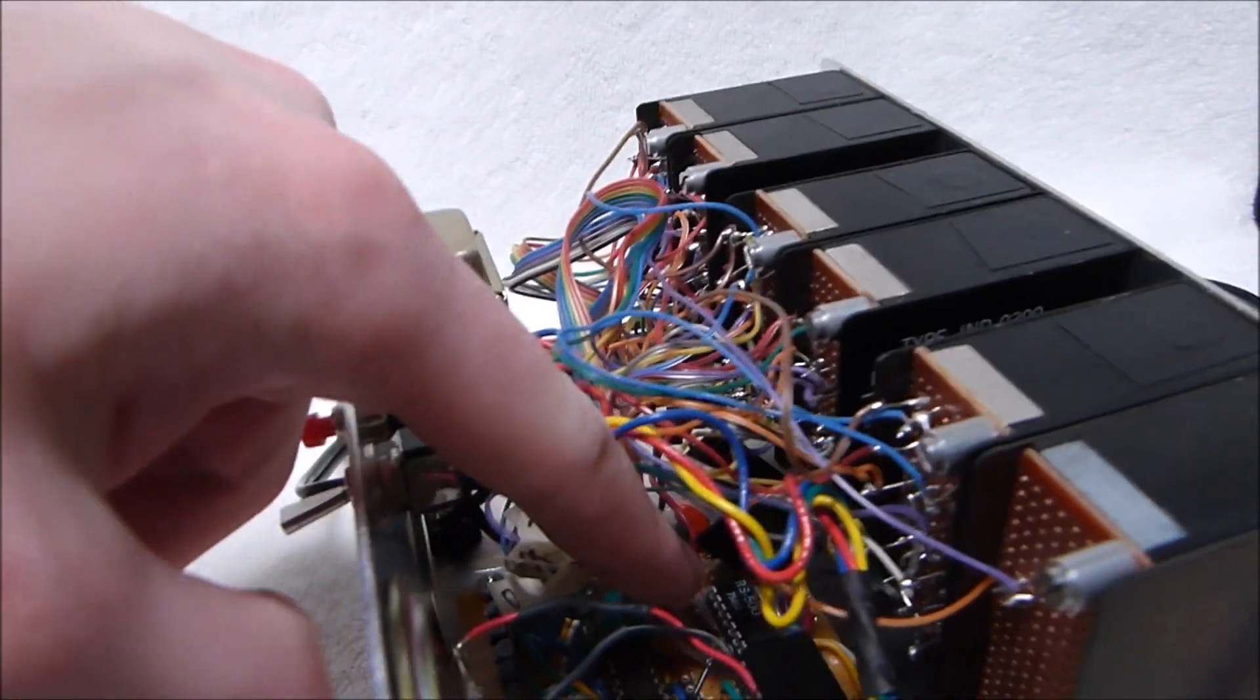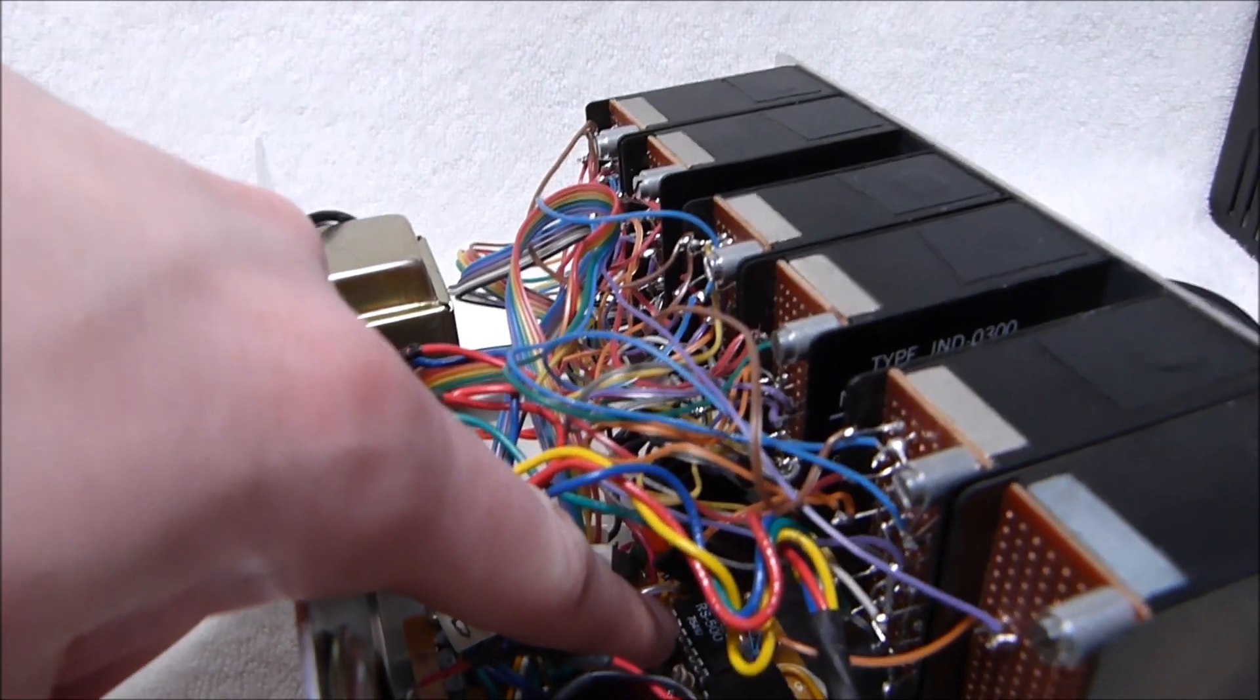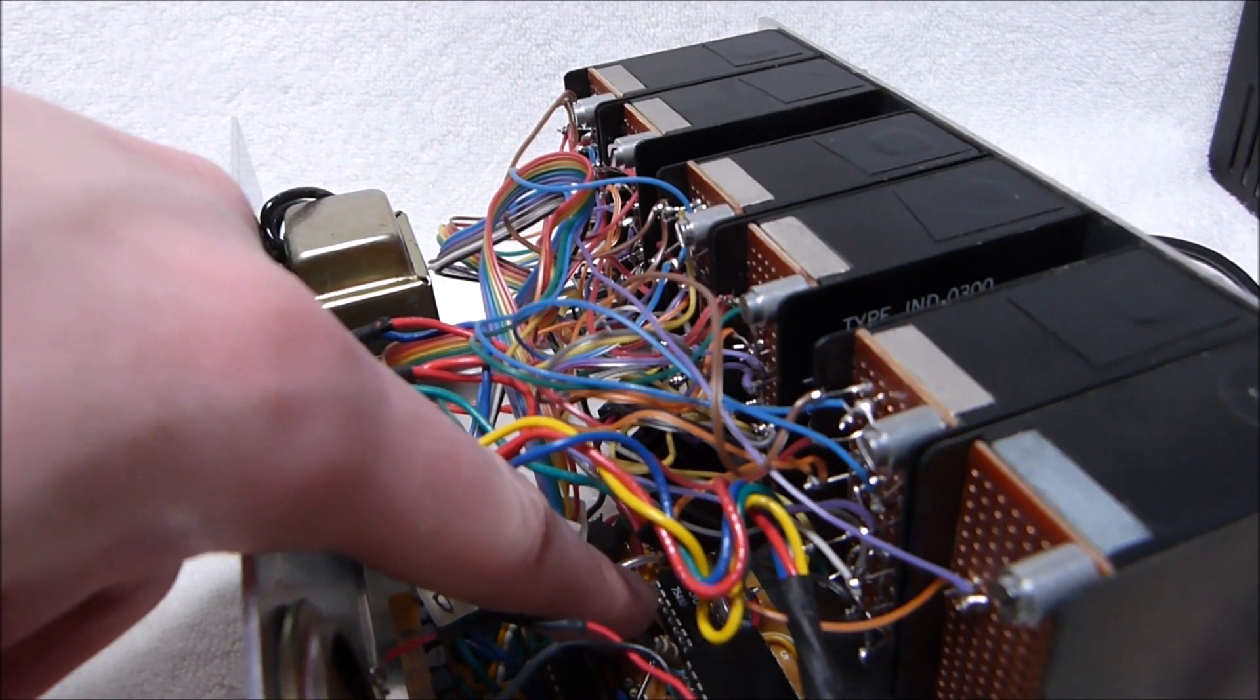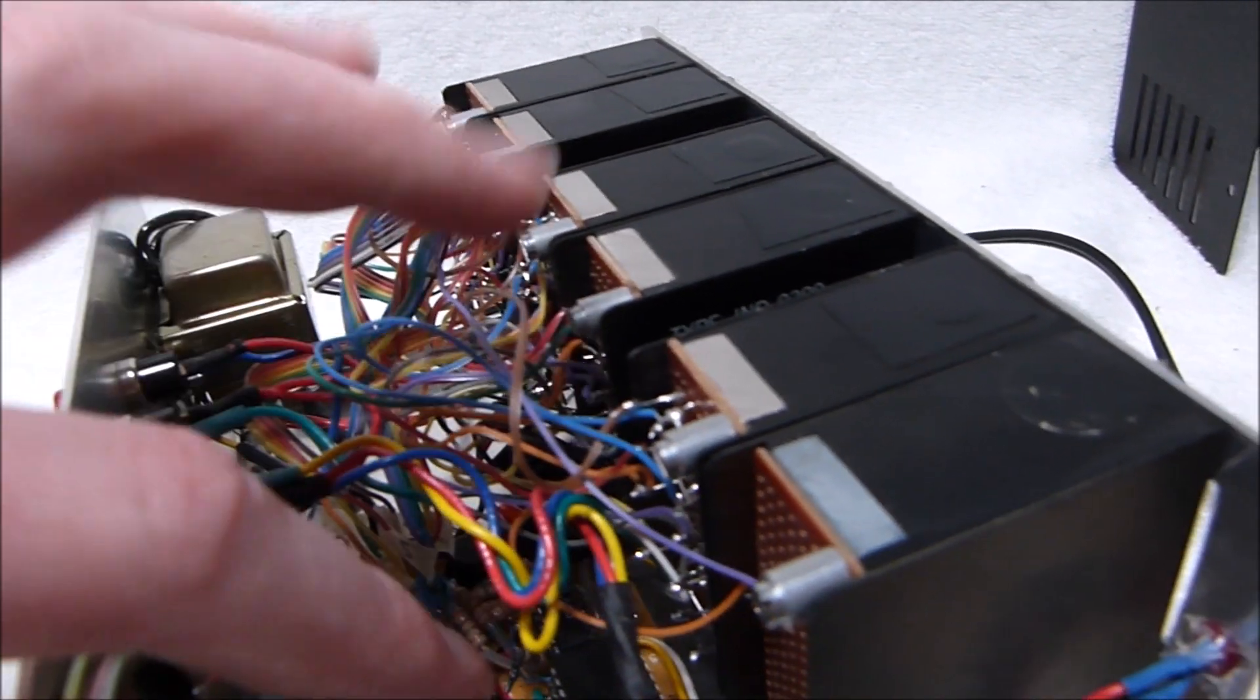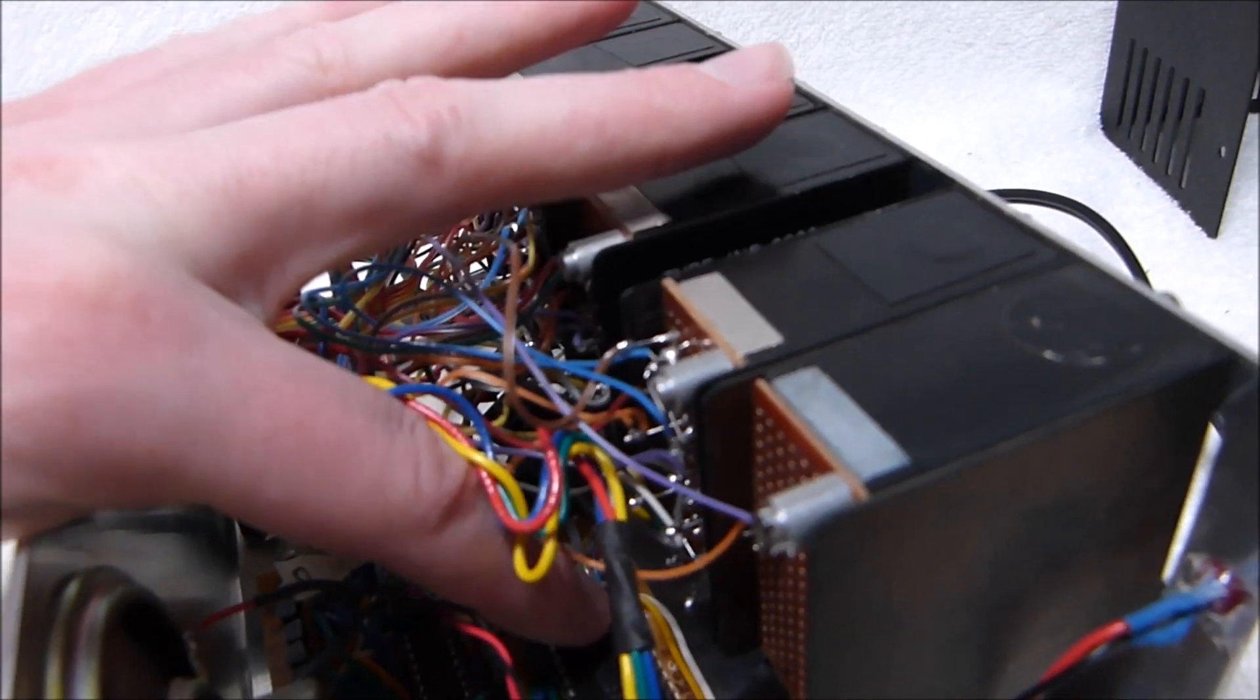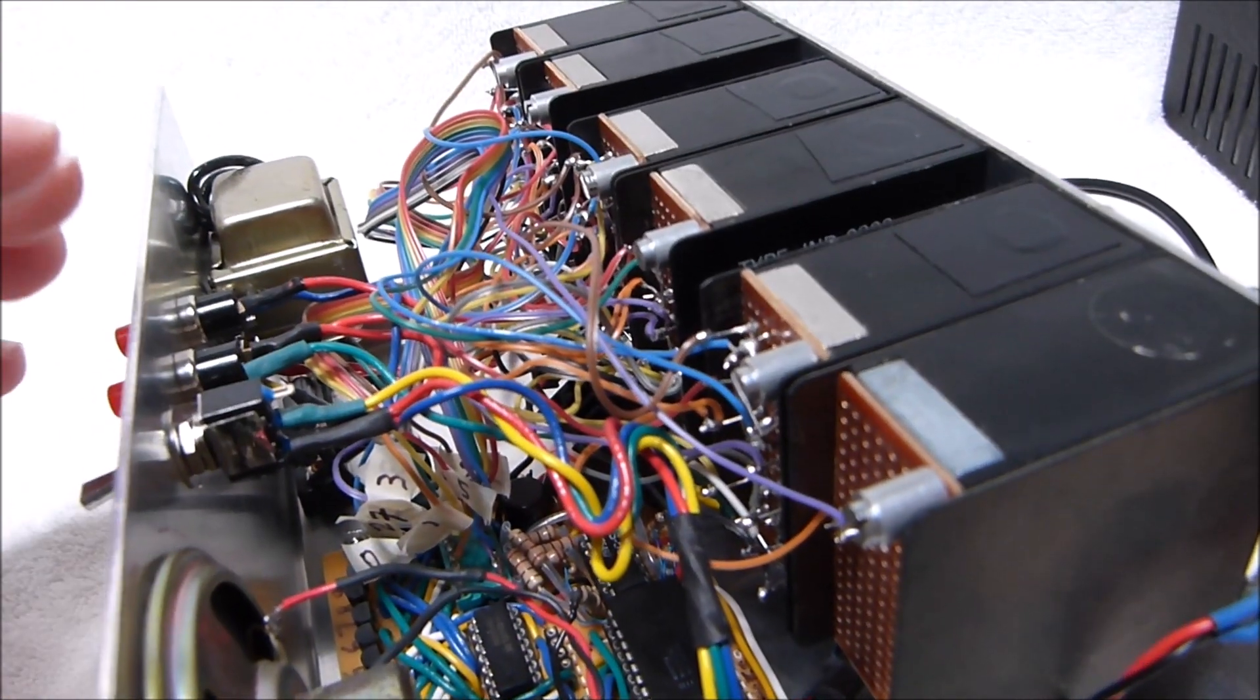As does the RS500 chip in the back there, which is just a rebadged 75492. That's a digit driver chip. And it's actually specifically called for in the datasheet for this MOSTEK clock chip. Although you can also use discrete transistors.